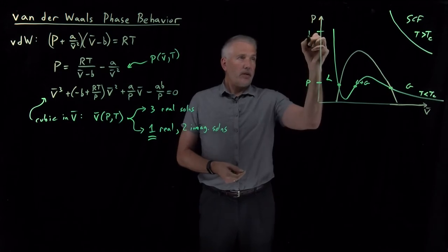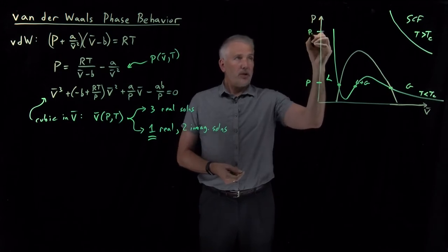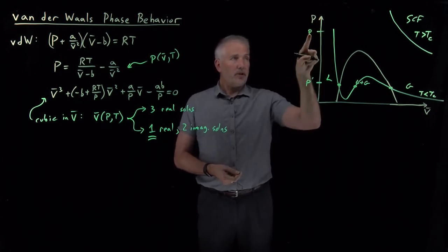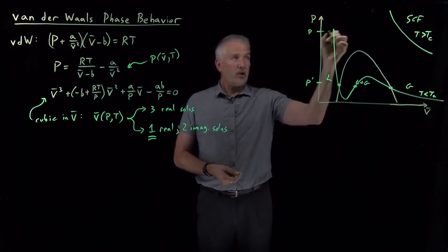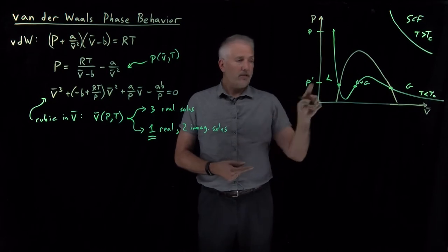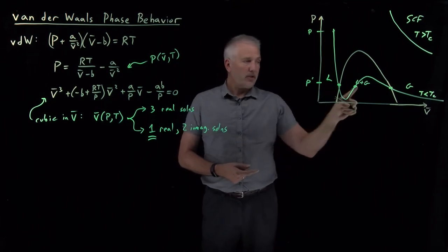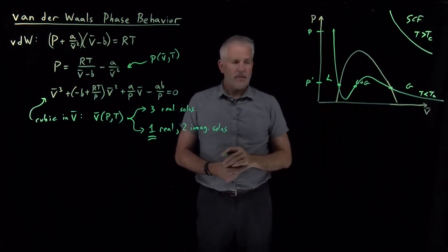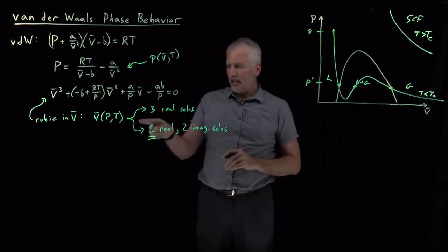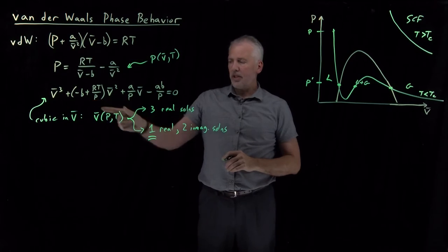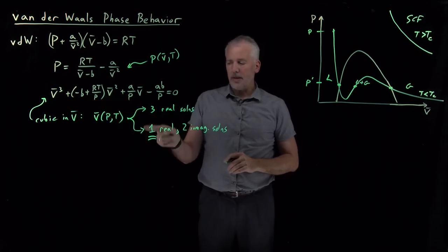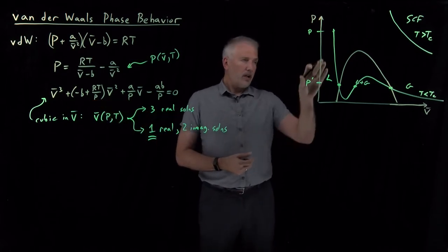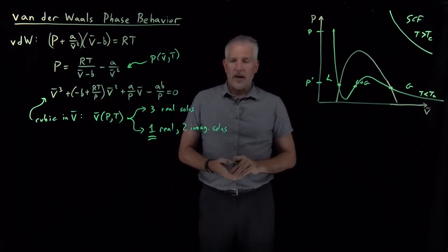If I give you a higher pressure, there is only one solution. If I give you a pressure in the oscillatory range, there may be three solutions. That is what it means for this cubic equation to have either three or one real solutions depending on the conditions.